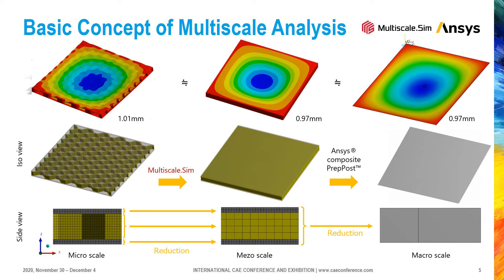This is an example of analysis results for each approach using simple boundary conditions. Contour images show the displacement of the component in the out-of-plane direction. In the micro scale model, the displacement distribution on the wave is caused by non-homogeneity of the core layer region, which cannot be observed in the homogenized meso and macro scale models. You can see that the maximum displacement value is almost the same in all three approaches. It is very important to obtain accurate equivalent material constants in order to simplify the model while keeping analysis accuracy.